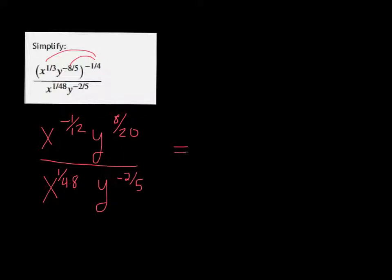All right, for the next part, we're going to divide the bases by subtracting the exponents. So x to the negative 1/12 divided by x to the 1 over 48 is going to be x to the negative 1/12 minus 1 over 48 power.